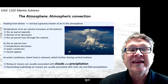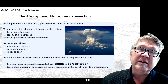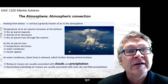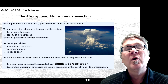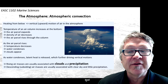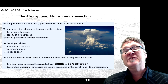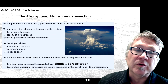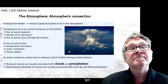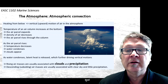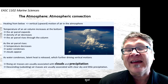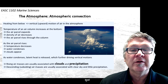The starting point is heating from below. It can happen in all regions of the earth but it's most pronounced in the equatorial tropical regions. Heating from below creates a vertical upward motion of air and moisture in the atmosphere. The temperature of an air column increases at the bottom — you heat up your air from below. The air parcel expands, like blowing up a balloon but through heating. The density of air decreases and the air parcel rises through the column.